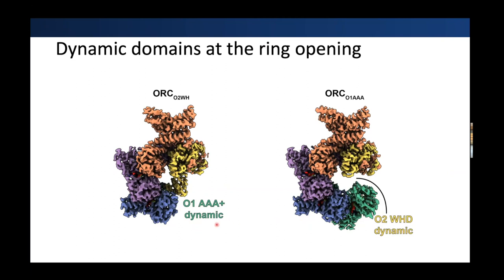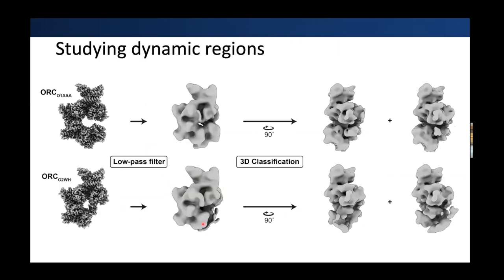We wanted to look at the dynamic regions and see what they were doing. It may be counterintuitive, but we had these higher-resolution structures and we low-pass filtered them to look at the dynamic region. In the case where you can't see the ORC1 AAA+, when we low-pass filter, you can start to see density there. We can further clean this up by doing a 3D classification at lower resolution, and you can see different movements.